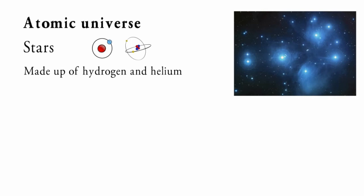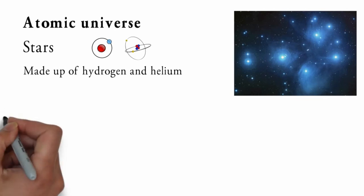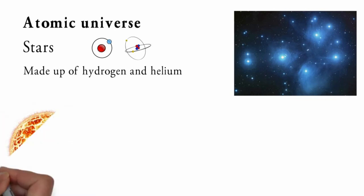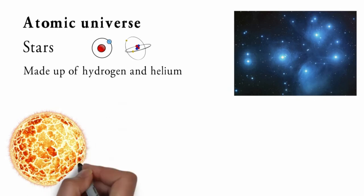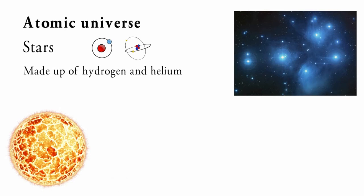The force of gravity is always trying to collapse a star by gravitational pull. The pressure created by the very hot star core, due to nuclear fusion of hydrogen and helium atoms, counteracts this force of gravity and prevents it from collapsing. When a star runs out of fuel, its inner layers start to collapse under the influence of gravity, which increases the temperatures and pressures in the core, eventually making the core collapse.